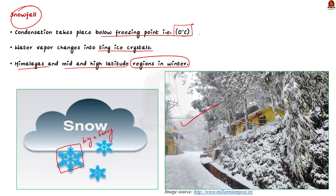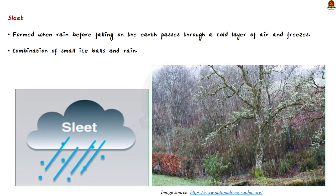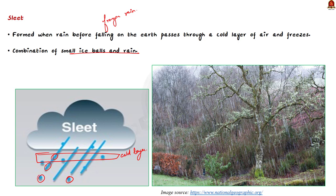The third form of precipitation is sleet. Sleet is a frozen rain formed when rain, before falling onto the earth, passes through a cold layer of air and freezes. The result is the creation of solid particles of clear ice. It is usually a combination of small ice balls and rain. It forms when rain, just before falling to the earth, passes through a cold layer of air and gets frozen.